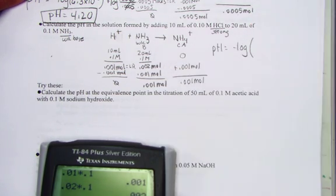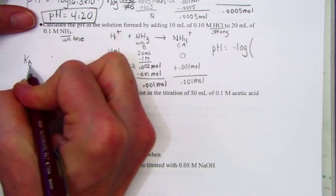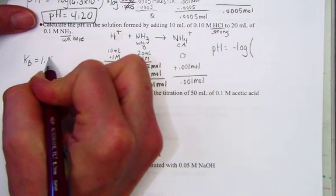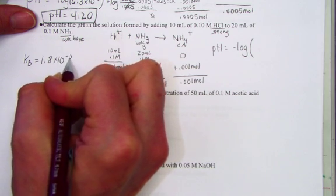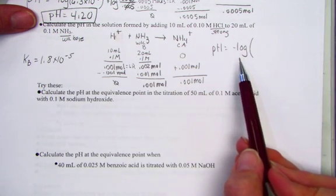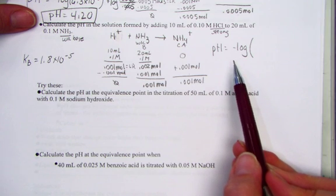Now notice, ammonia is a base. When I look up Kb for ammonia, it is 1.8 times 10 to the negative 5th. Henderson-Hasselbalch requires a Ka value, not a Kb.